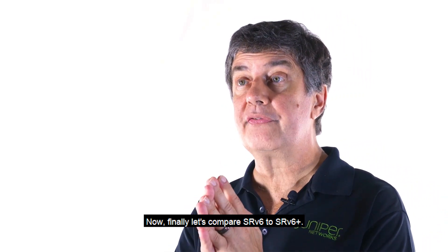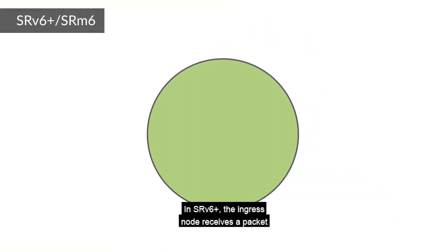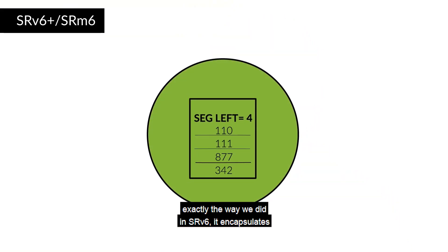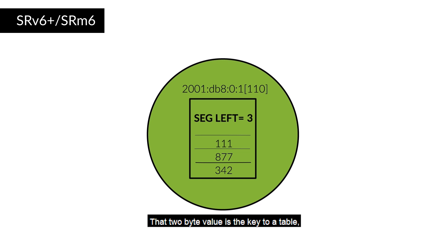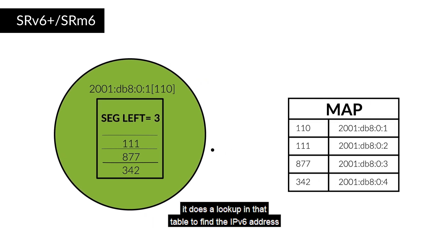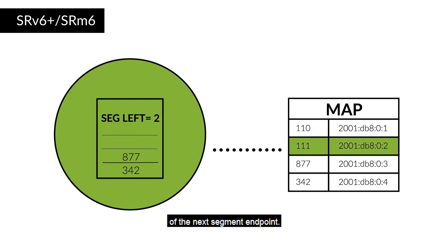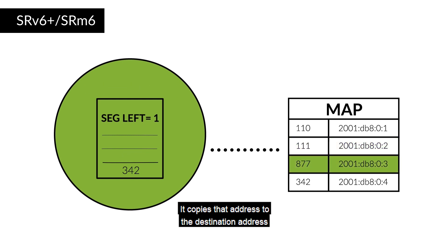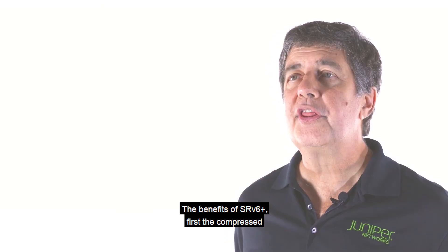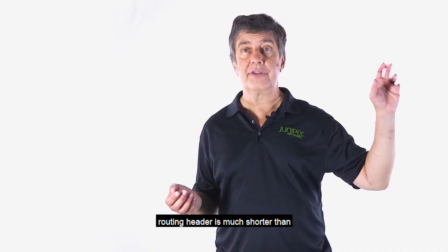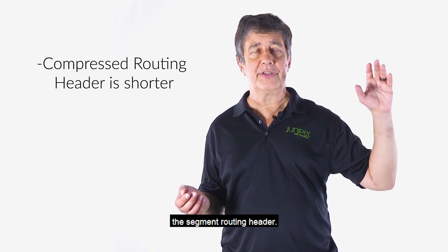Finally, let's compare SRv6 to SRv6+. In SRv6+, the ingress node receives a packet exactly as in SRv6, and encapsulates the payload in an IPv6 header. That IPv6 header can have one or two extension headers. There is a two-byte value that serves as the key to a table. It does a lookup in that table to find the IPv6 address of the next segment endpoint, copies that address to the destination address of the IPv6 header, and forwards the packet.